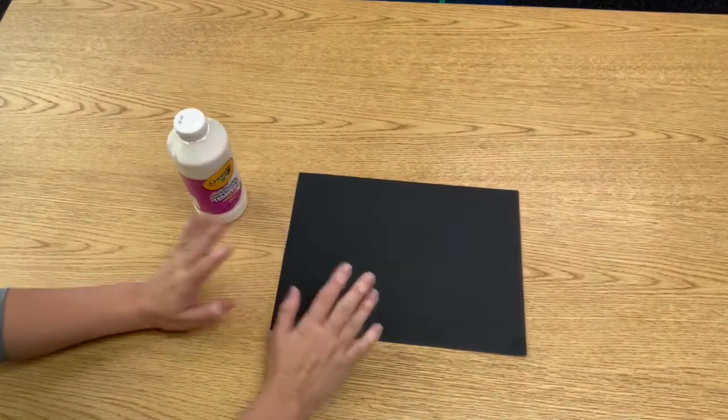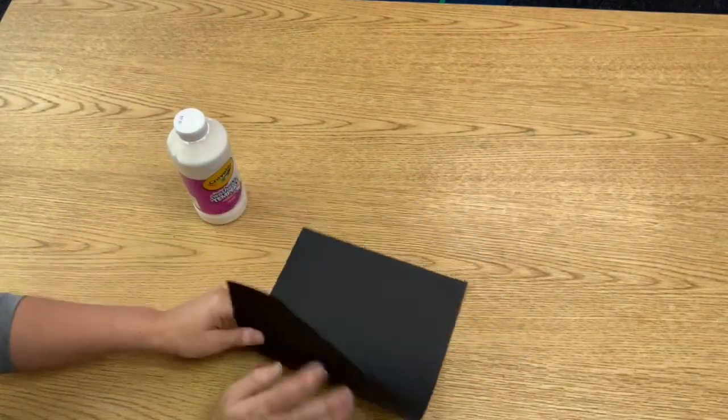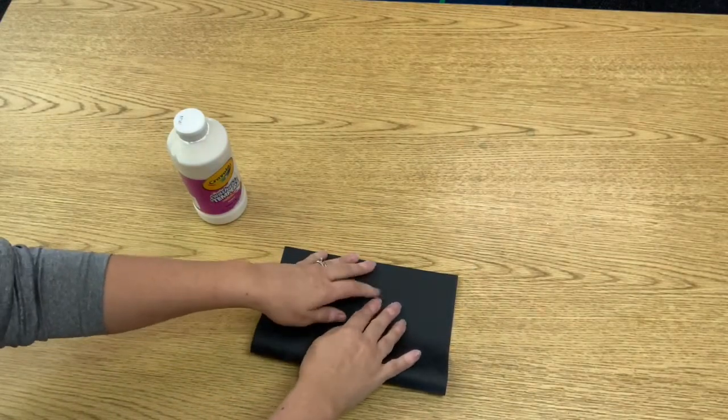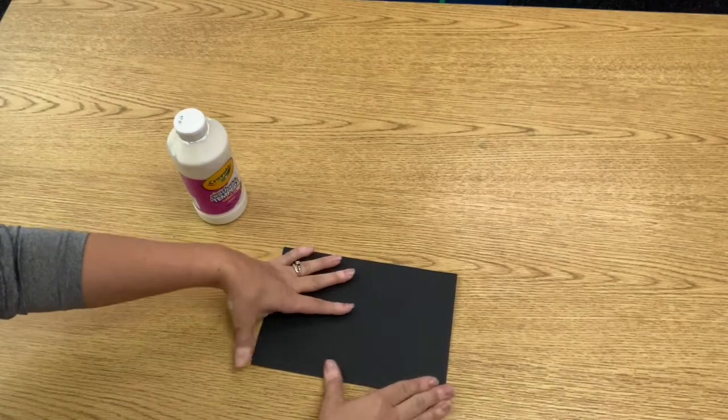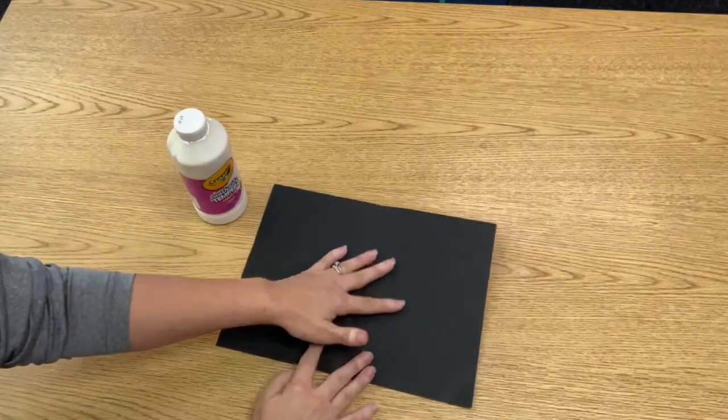Okay, so I have my black piece of paper and I have my white paint. What I want you to do first is we're going to fold our paper over once. Line up the edges—maybe mom and dad can help. We're going to fold it in half and then we're just going to open it back up.